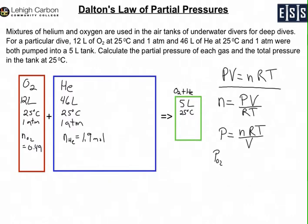The partial pressure of oxygen uses the moles of oxygen times RT divided by V. If you calculate that, you'll get 2.4 atmospheres. So oxygen exerts 2.4 atmospheres in this tank. If you solve the equation using the helium moles, you get 9.3 atmospheres.